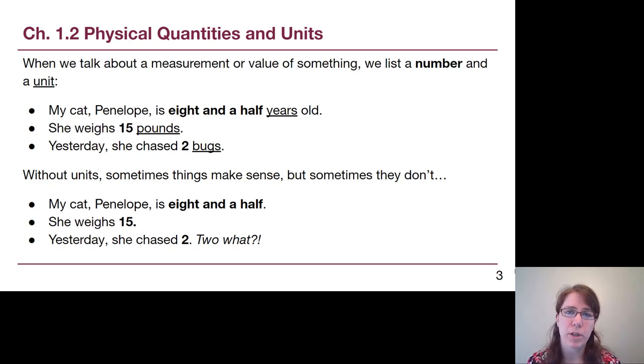Let's go through a couple of examples. My cat Penelope is eight and a half years old. Eight and a half is the number and years is the unit that gives that number context. She weighs 15 pounds—again, 15 is the number and pounds is the unit. Yesterday she chased two bugs. Two is the number and bugs, while not a standard scientific unit, is still the thing giving that number context.